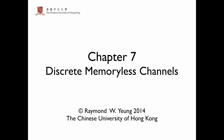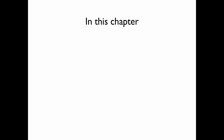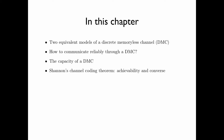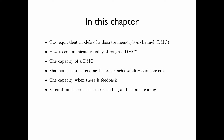Chapter 7: Discrete Memoryless Channels. In this chapter, we will introduce two equivalent models of a discrete memoryless channel, or DMC. We will discuss how to communicate reliably through a DMC, the capacity of a DMC, Shannon's channel coding theorem — both achievability and converse — the capacity of a DMC in the presence of feedback, and finally, the separation theorem for source coding and channel coding.